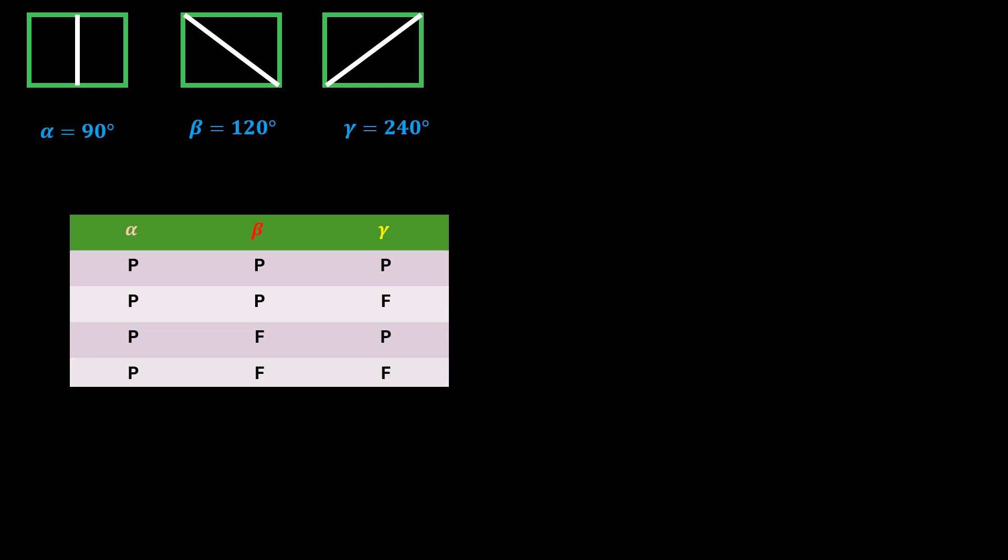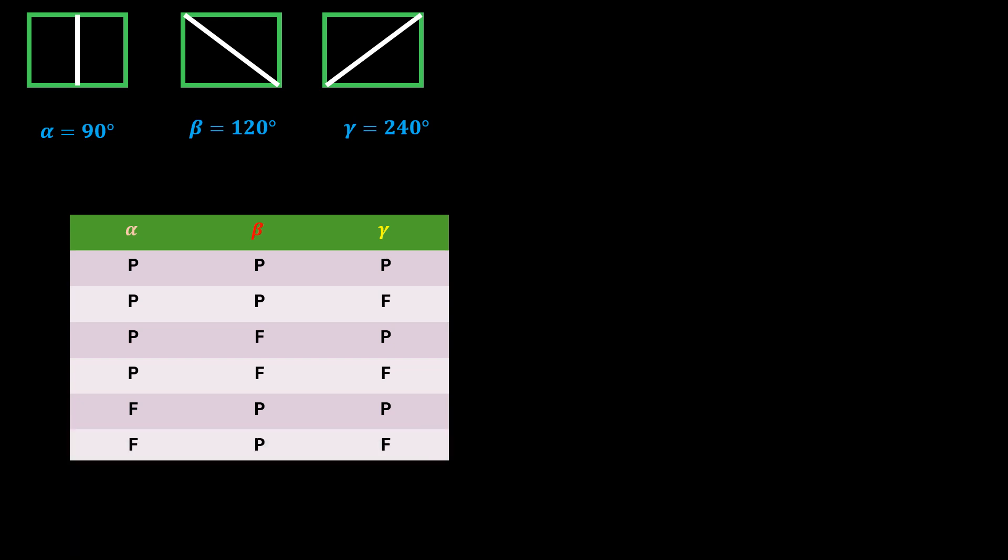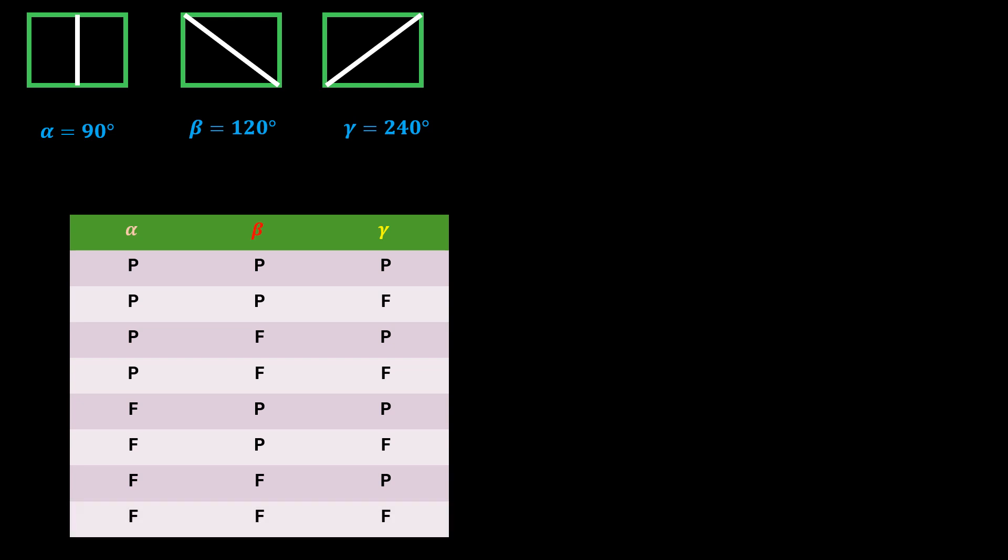Or it can go through alpha but not beta and gamma, or through beta and gamma but not alpha, or through beta but not alpha and gamma, or through gamma but not alpha and beta, or it will not go through any of them. We are dealing with linearly polarized light. These are the eight possibilities.